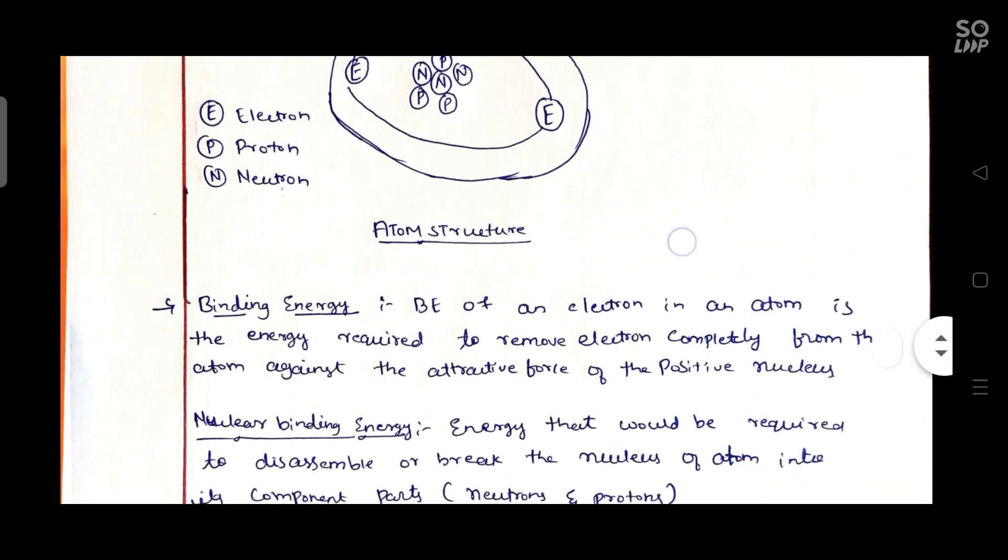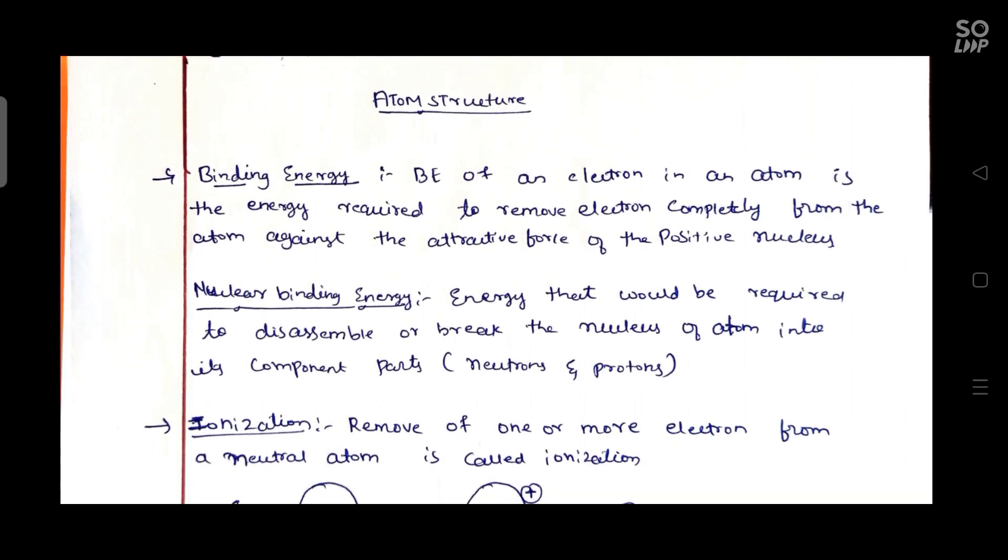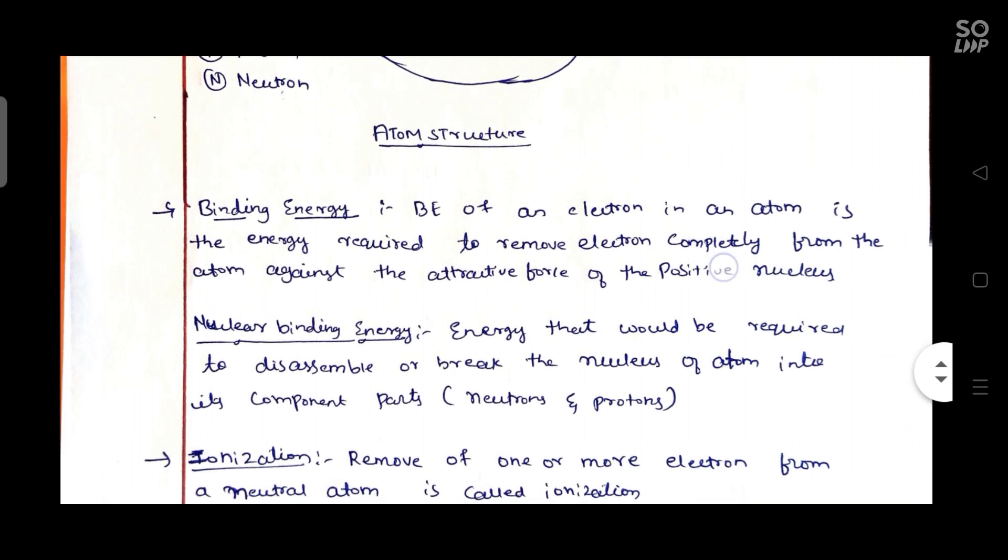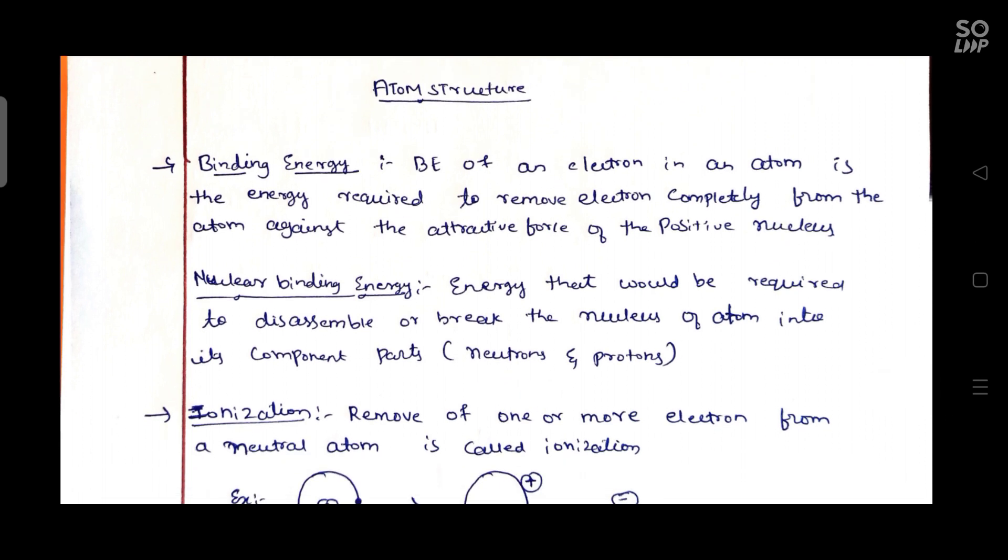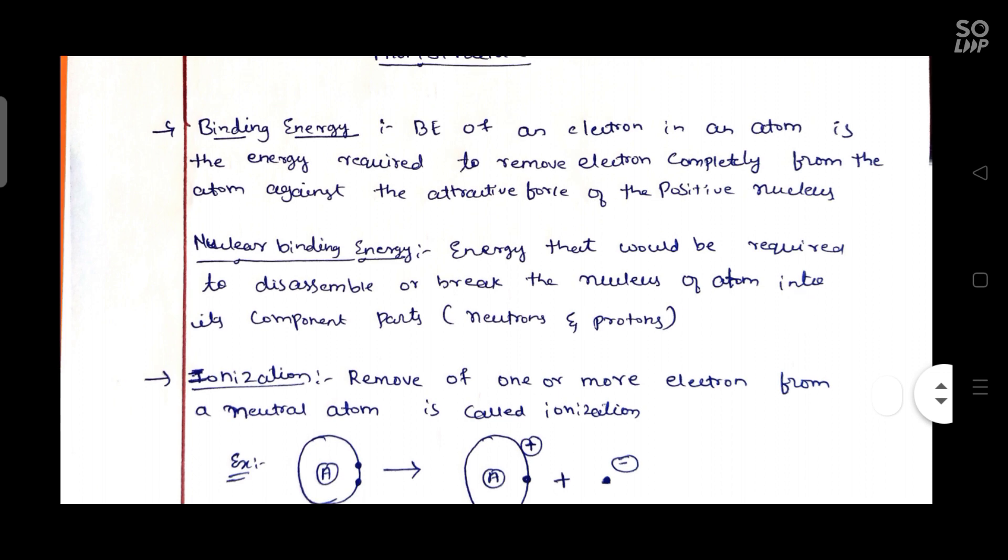For example, there's nuclear binding energy. Another definition: the energy that would be required to disassemble or break the nucleus of an atom into its complete component parts - that's nuclear binding energy. The component parts include neutrons, protons, and electrons. To totally remove or disassemble these parts is nuclear binding energy.